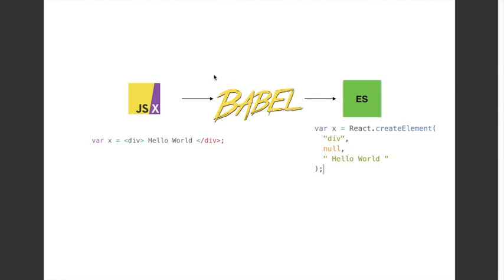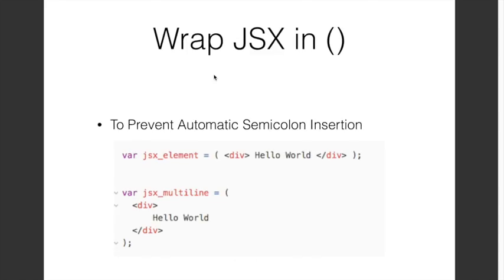Some more things about JSX. It's always a good idea to wrap JSX in brackets. This is to prevent something called automatic semicolon insertion — you can read about that in the link given in the description below. If it's a single-line JSX expression you can just place the brackets on the same line. If it's a multi-line JSX statement, you can put the opening bracket first, then write your JSX on the lines below, and finally end with a closing bracket.